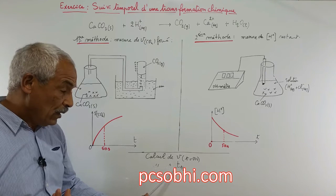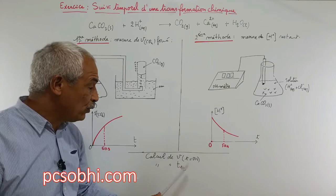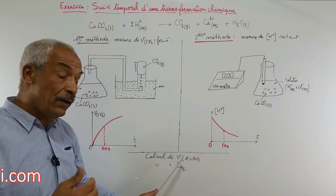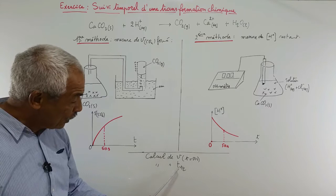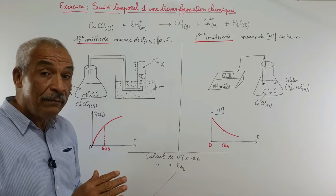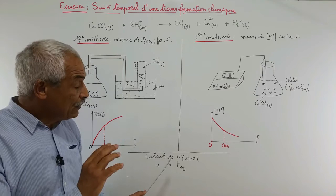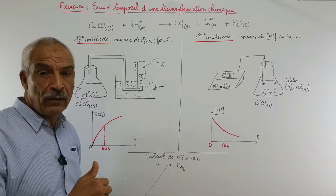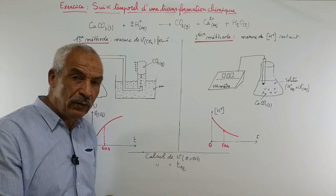Nous allons calculer par les deux méthodes le temps de demi-réaction T1/2 pour cette transformation. Nous devons normalement trouver la même vitesse volumique, puisque c'est la vitesse de la même réaction dans les mêmes conditions au même instant. De même pour T1/2. Cependant, puisque ce sont des mesures expérimentales, on aurait des valeurs approximatives, donc on ne peut pas aboutir exactement aux mêmes résultats, mais on doit s'attendre à des résultats très rapprochés.